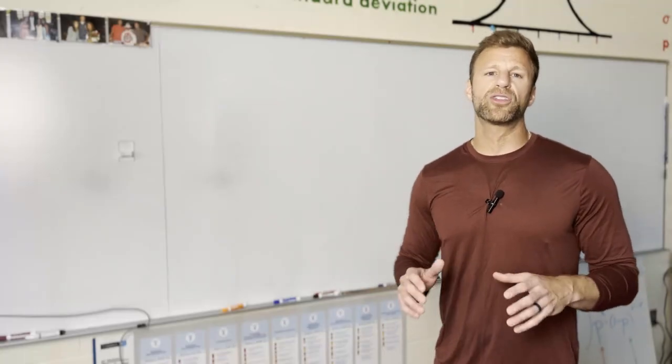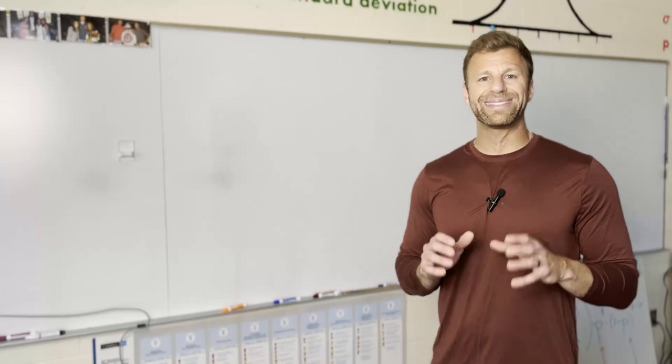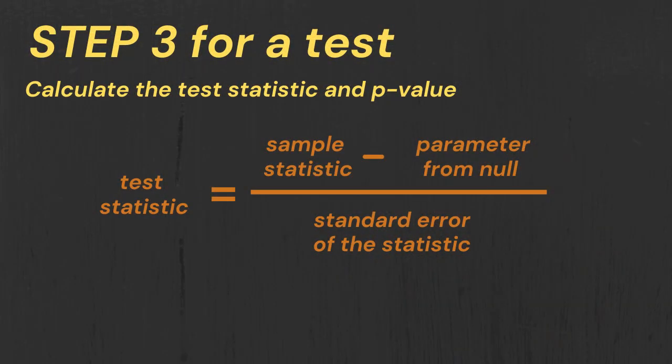Now if you're doing a significance test, the third step is all about getting that test statistic and that corresponding p-value. The generic formula for a test statistic is on the AP stats formula sheet. You're going to take a sample statistic, something you observed, minus the population parameter that comes from your null hypothesis, what you believe to be true, divided by, you guessed it, the standard error.